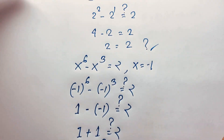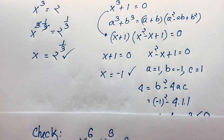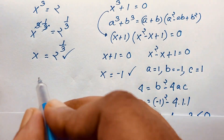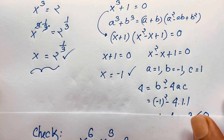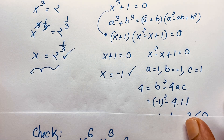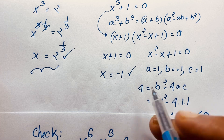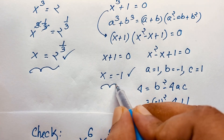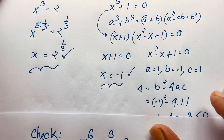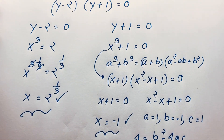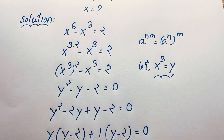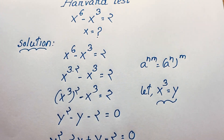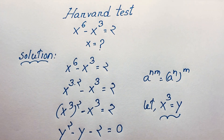So our final answer for this exponential math Olympiad question is x is equal to 2 to the power 1 over 3, and x is equal to minus 1. Thank you all — if you enjoyed this math Olympiad question, subscribe to my channel for other interesting videos. Goodbye, take care everyone, have a good day.